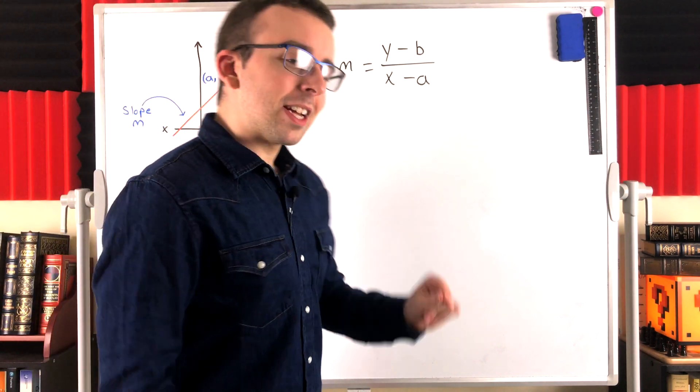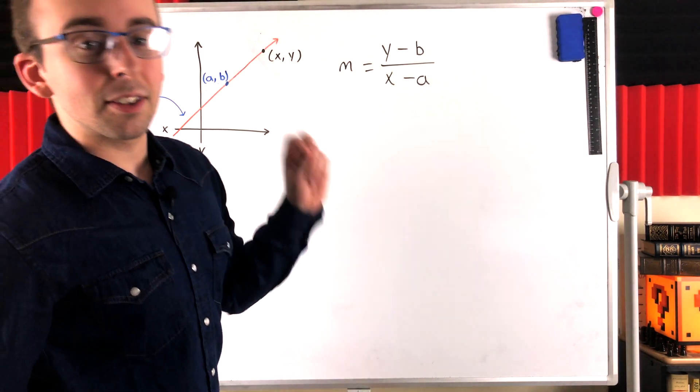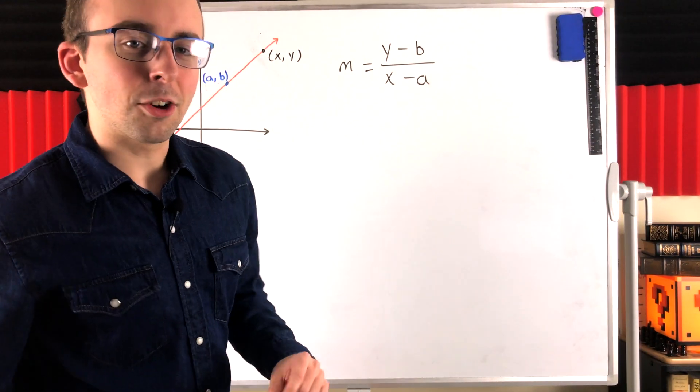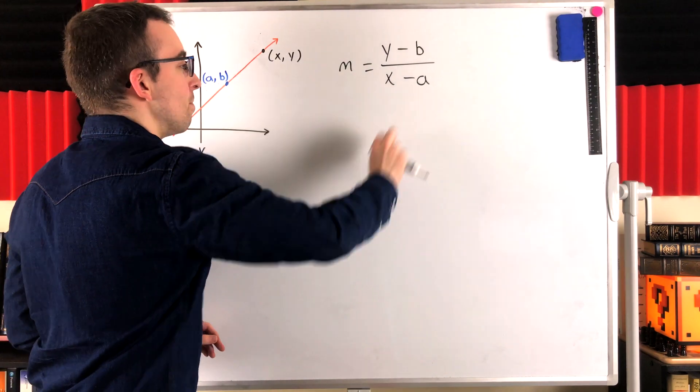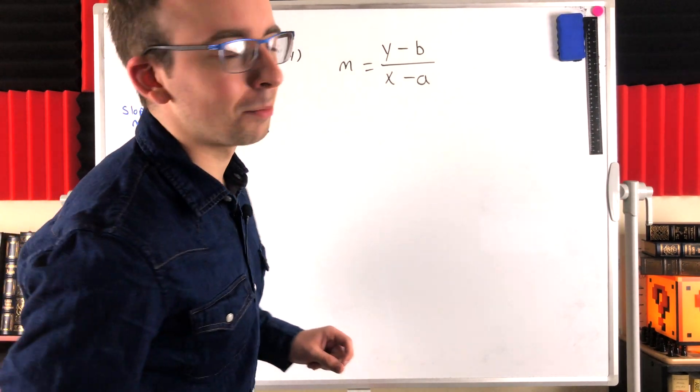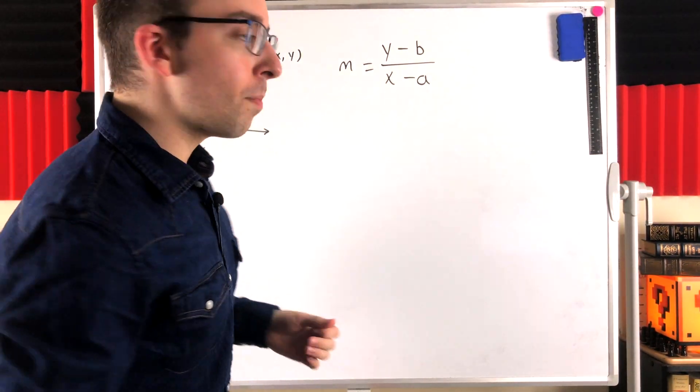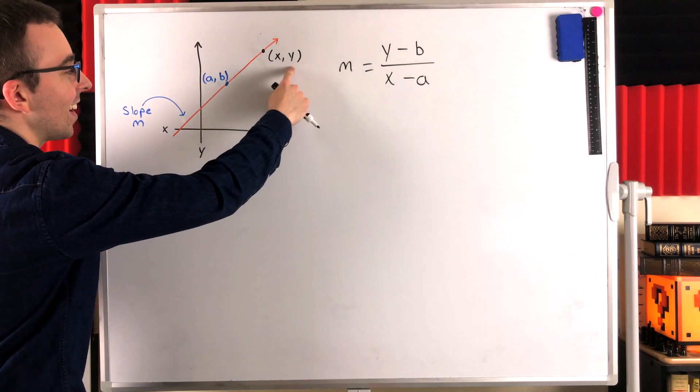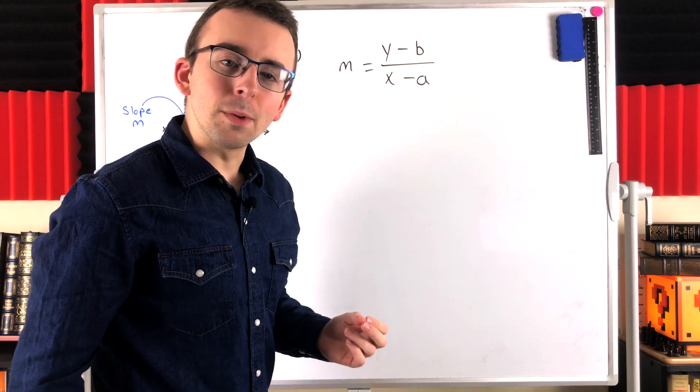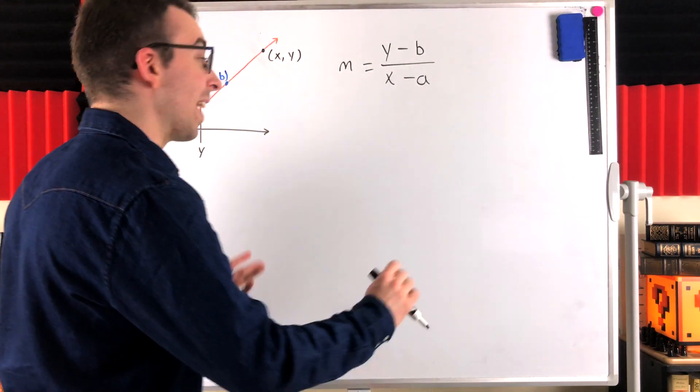So, now, this equation right here describes every single point on this line except for the given point AB. Because if we try to plug that point into this equation, we're going to get A minus A in the denominator, which is zero. So, that would be a problem. The reason that doesn't work is that this is an expression for the slope between a point on the line and AB. If we plug in AB, that's the slope between AB and itself, which doesn't really make any sense, which is why it doesn't work.